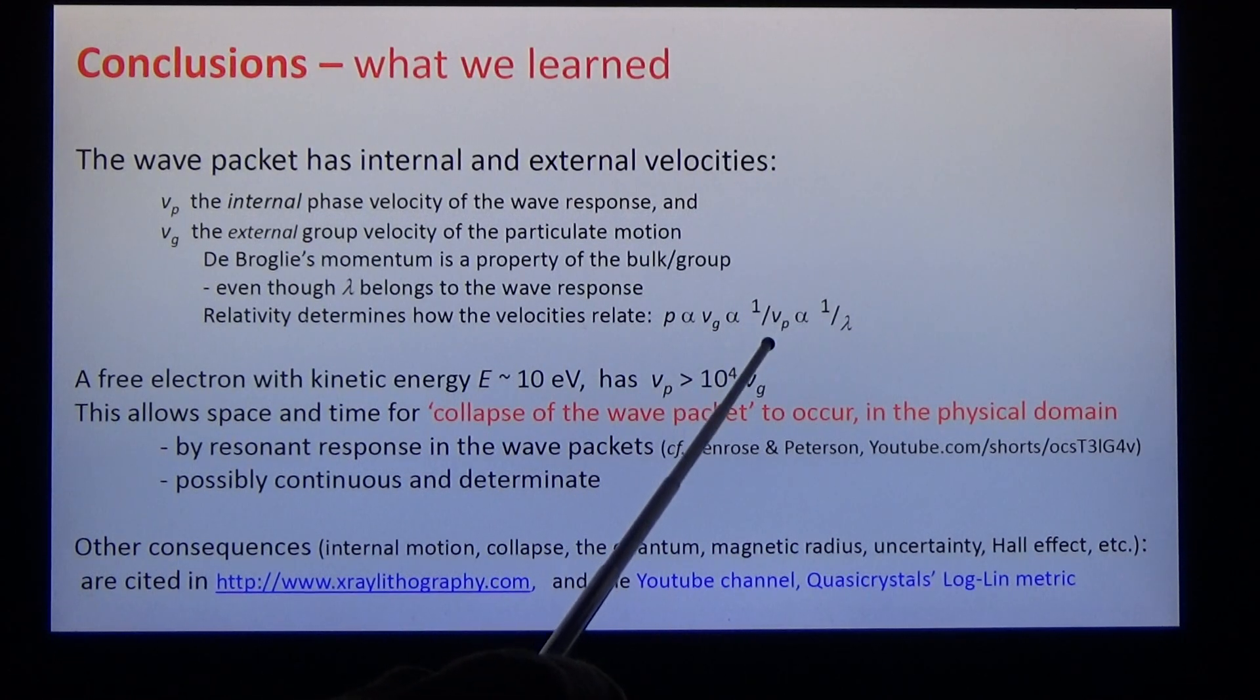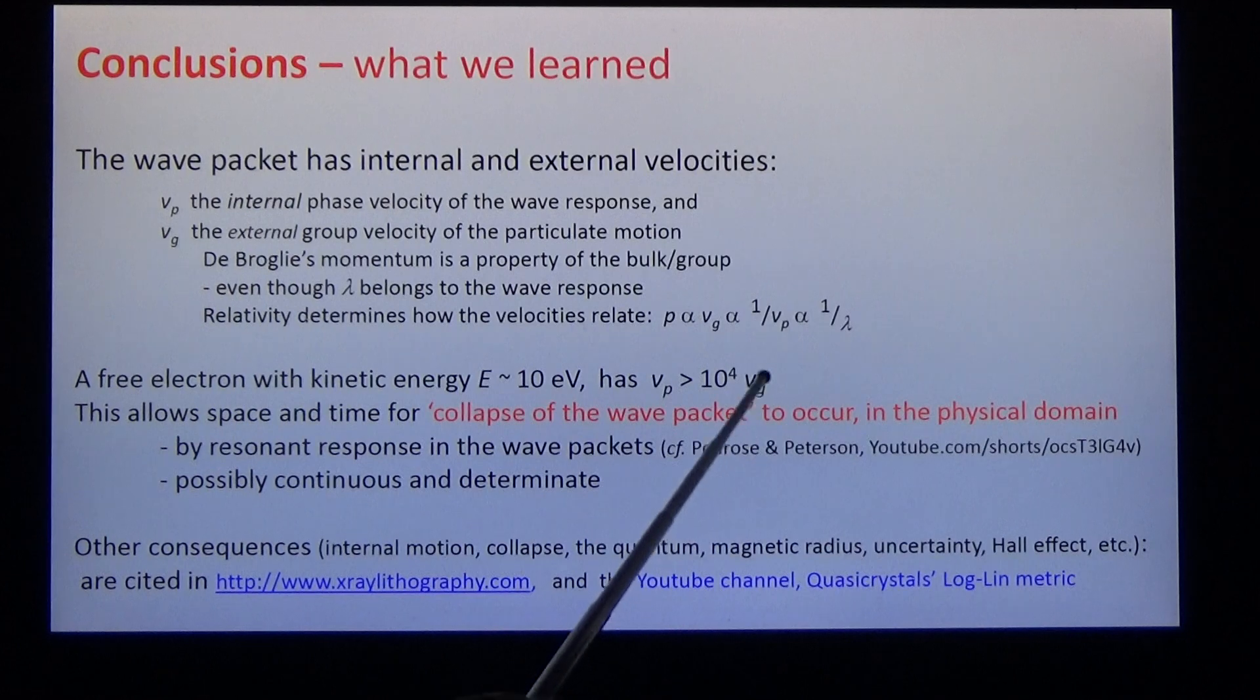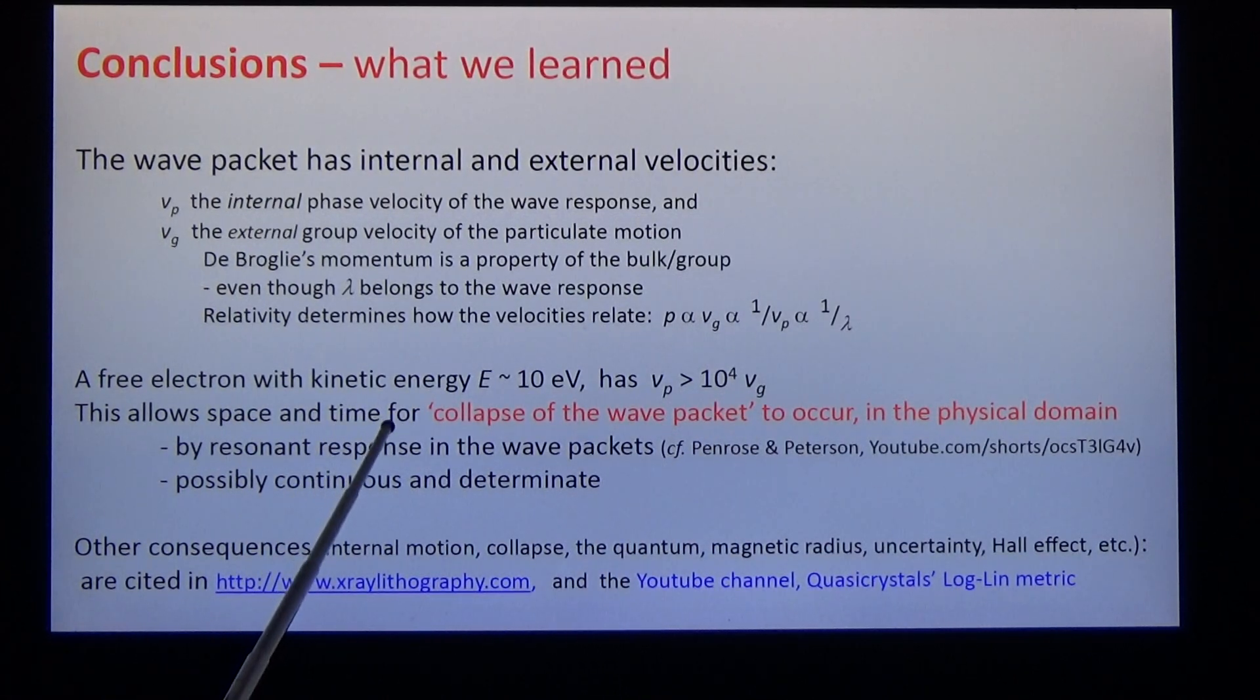Momentum is proportional to group velocity. Group velocity is the inverse of phase velocity. The phase velocity is proportional to wavelength. The free electron of kinetic energy 10 electron volts has a phase velocity which is 10,000 times greater than the group velocity. This allows space and time for collapse of the wave packet to occur in the physical domain by resonant response of wave packets. This is a solution to the traditional collapse of the wave packet problem in quantum mechanics.